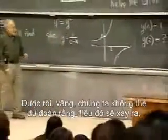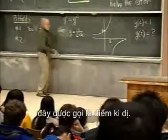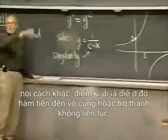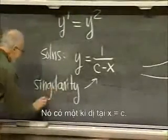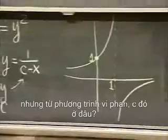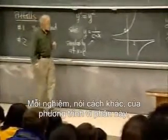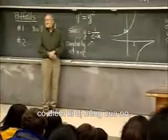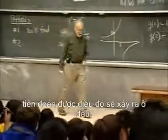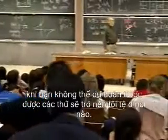Can we predict that's going to happen and avoid it? The whole difficulty is this is called a singular point — this solution has a singularity at x = c. From the differential equation, there is no way of predicting where c is. Each solution to this differential equation has its own private singularity, which only it knows about — where it's going to blow up. There's no way of telling from the differential equation where that's going to be. That's one of the things that makes numerical calculation difficult: you cannot predict where things are going to go bad in advance.